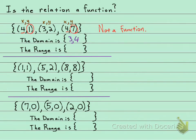And then the range is all your y values. So it would be one, two, and seven. So let me make a little note here. The domain is the x values, and the range are the y values.